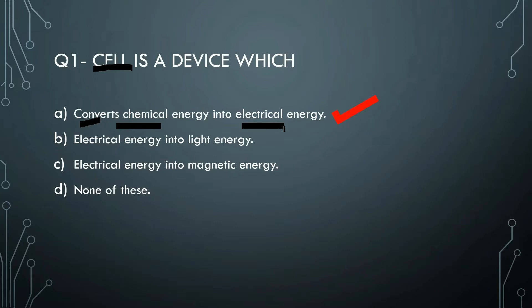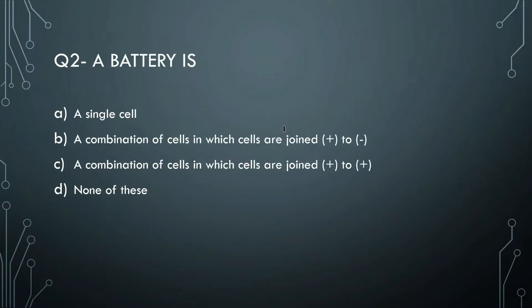Next question: what is a battery? The options are: a single cell, a combination of cells in which cells are joined plus and minus, a combination of cells in which cells are joined plus and plus, or none of these. The right answer is B - a combination of cells joined plus and minus, because the battery has two terminals - one plus and one minus.